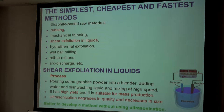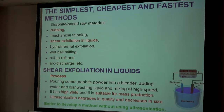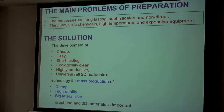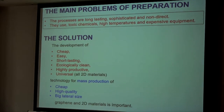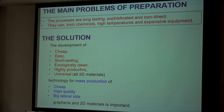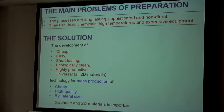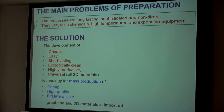I presented here the shear exfoliation process, where we can get mass production. But in this case we use ultrasonication, which degrades the quality and decreases the size of the graphene and two-dimensional flakes. The main problems of the preparation are that the processes are long-lasting, sophisticated, and not direct — they use toxic chemicals, high temperatures, and expensive equipment.